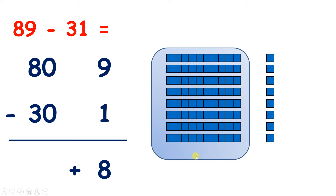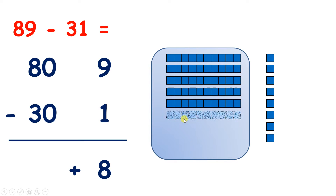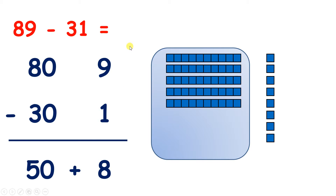So now we look at our tens. We always deal with our units first, and then the tens. We have 8 tens and we want to subtract 30, so we want to subtract 3 tens. Let's take away 1, 2, 3 tens, and that leaves us with 5 tens, or 50. So 80 take away 30 is 50. Now we have 50 plus 8, which gives us our answer: 58.